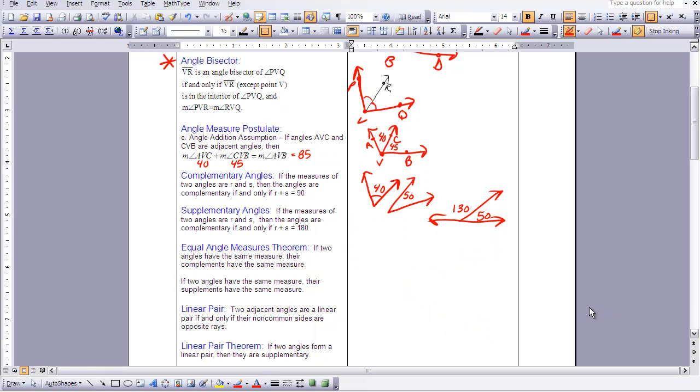The next theorem that I have doesn't really have a diagram for it, but I'm just going to talk you through it. If two angles have the same measure, their complements have the same measure. So if I have two angles that are 40 degrees, then they would each have a complement of 50 degrees to make complementary angles.